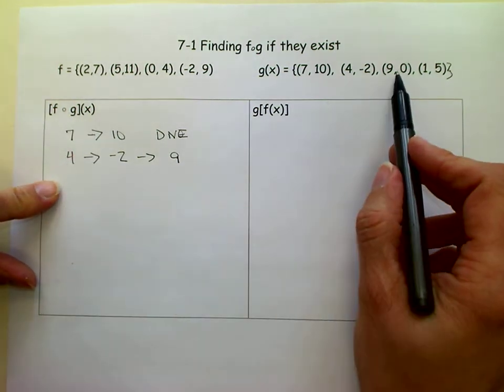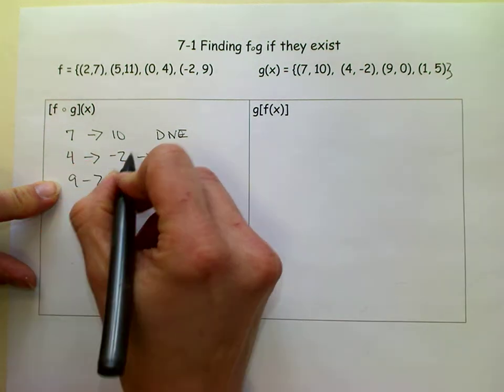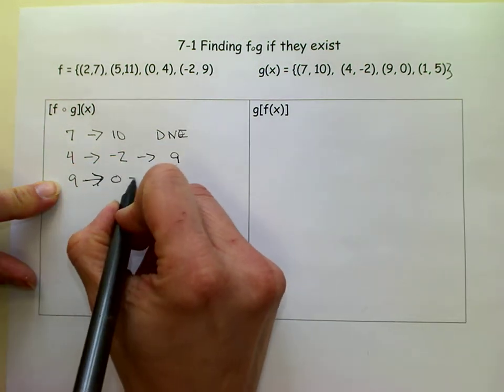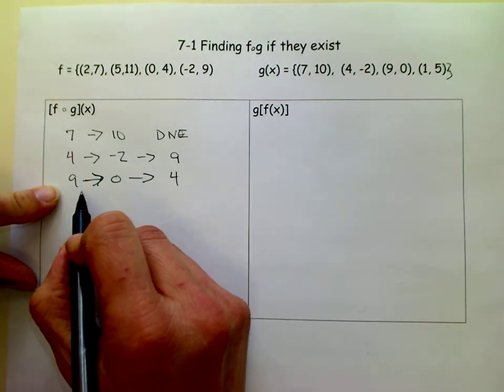So now we're going to find f of g of 9, so we go to the 9, we get a 0. We go to, that's an arrow, not a 7. We go to the 0 and we get a 4, so now we know that f of g of 9 is 4.